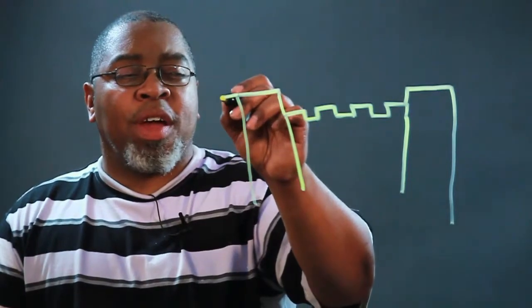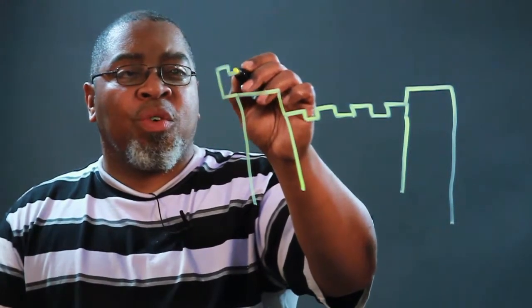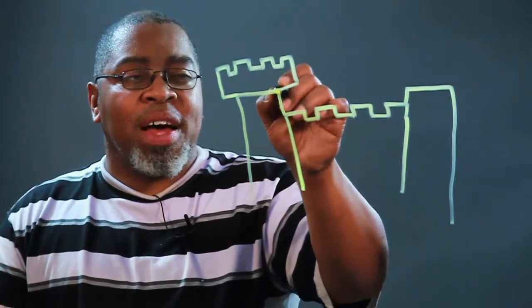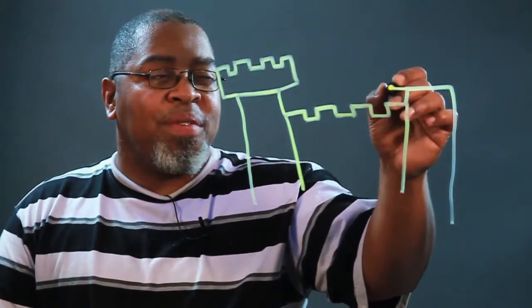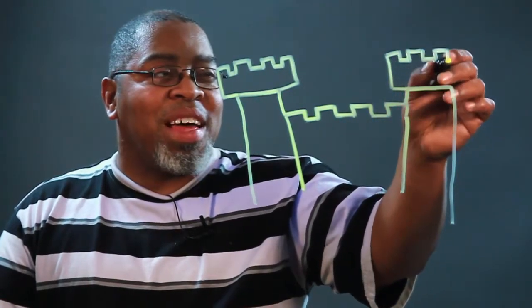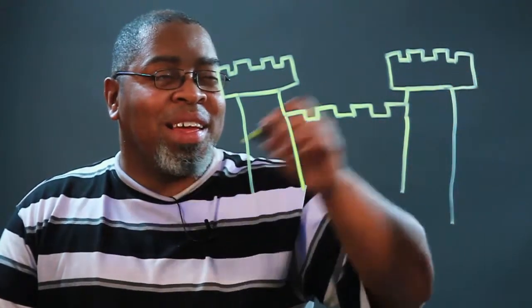Next we're going to come here and draw this shape right here. These are the walls where the knights fight from, where they shoot arrows. Do the same thing on the opposite side.